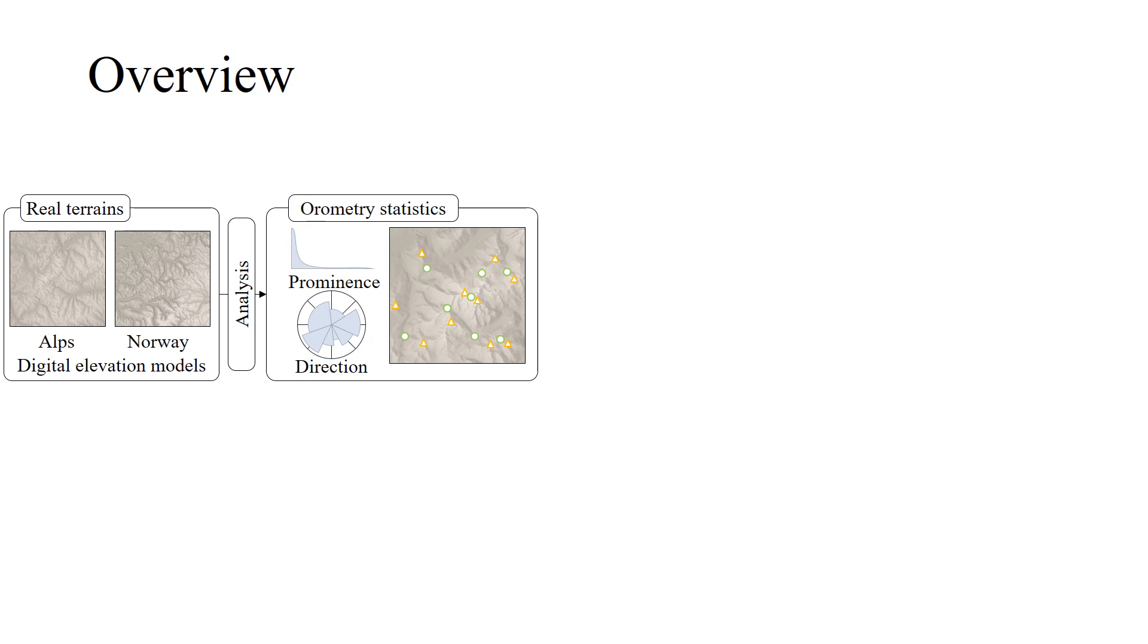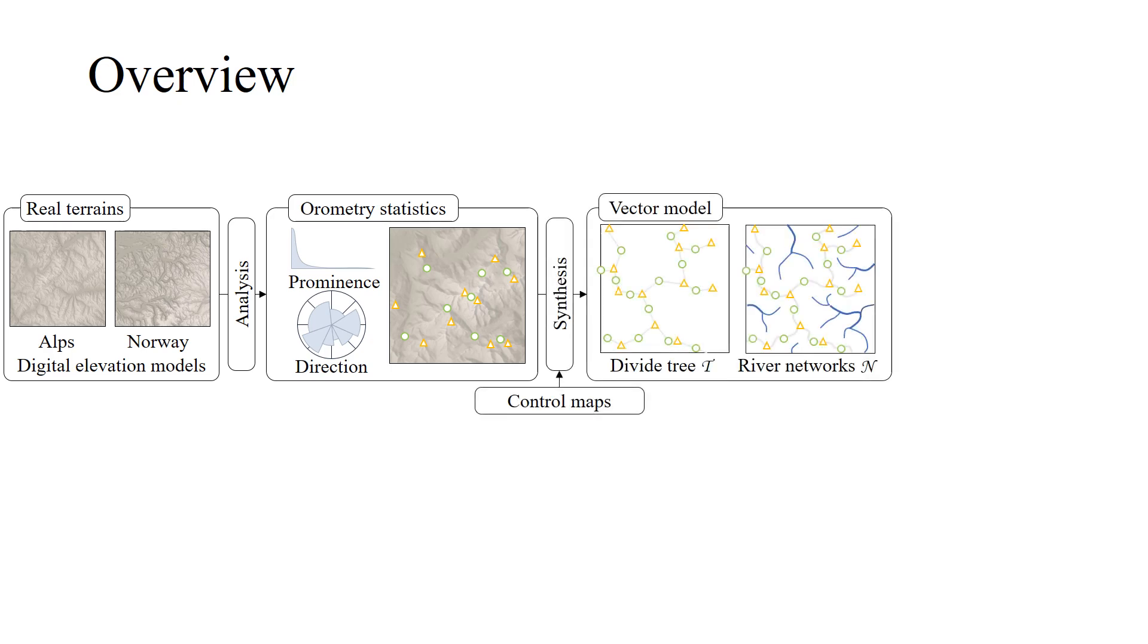We then perform a random forest classification and demonstrate that terrains can be efficiently classified using these statistics. Using terrain classes and user-defined control maps, we can automatically synthesize new terrain that conforms to the orometry.